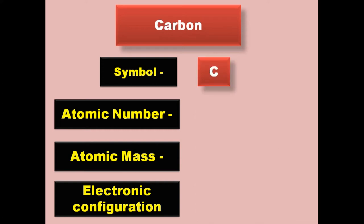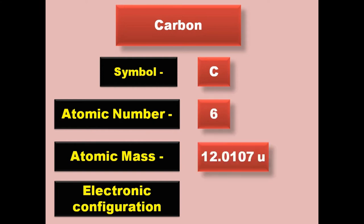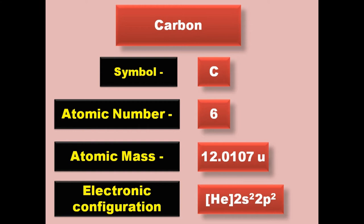Carbon has symbol C, atomic number 6, atomic mass 12.0107, electronic configuration [He] 2s2. Carbon exists in solid form at room temperature.